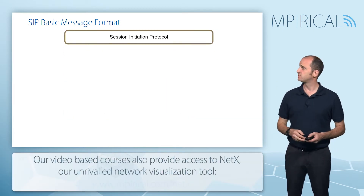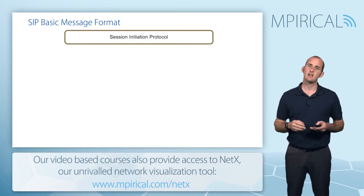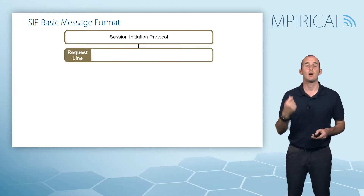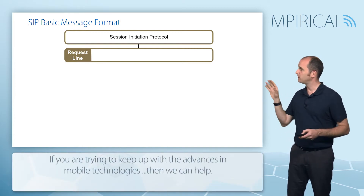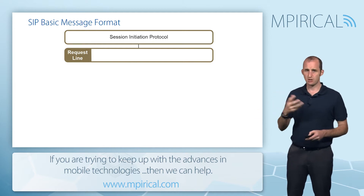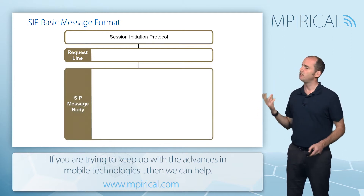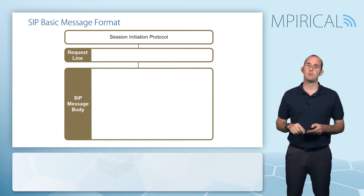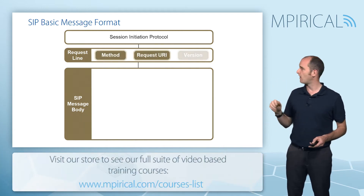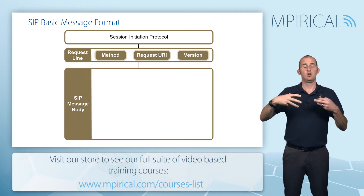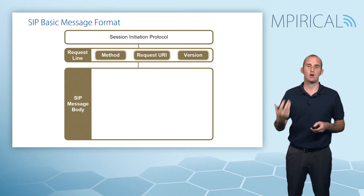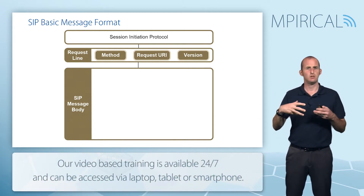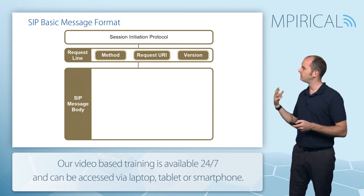In terms of the SIP messages themselves, they always take a standardized format. If you were to look at SIP on a protocol analyzer, you will always see — if it was a request — a request line. For a response, it wouldn't be a request line; it would be a status line instead. Considering a request, you would always see a request line and then the actual SIP message body itself. The request line always takes the same format, comprised of the method, the request URI, and the version. The method is the whole point of the request — what is the request trying to actually do?